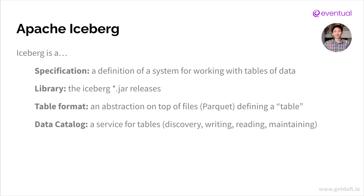However, the description of the system isn't very useful — you need the ability to interact with the system. Therefore, Iceberg is also actually a library. You can download the Iceberg libraries, primarily the Iceberg JARs, which are Java/JVM libraries. There are also Python libraries introduced later on. Primarily, Iceberg was built for the JVM ecosystem. And then Iceberg is a table format, meaning that you interact with Iceberg tables and they abstract away the underlying files. You no longer have to work with files directly — you interact with tables. And lastly, Iceberg is also a data catalog, meaning you can hit the Iceberg catalog and ask it: give me table A, give me table B, give me table C, write to table A, write to table B, read from table A. Basically, it gives you the ability to work with tables of data in the cloud.